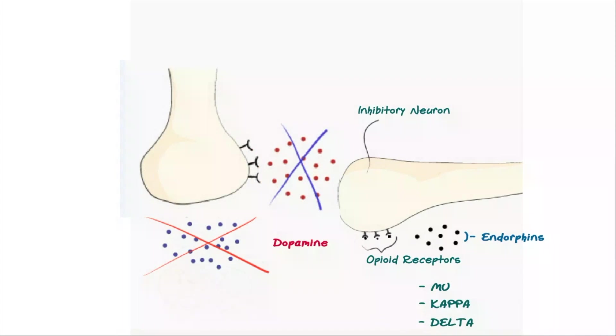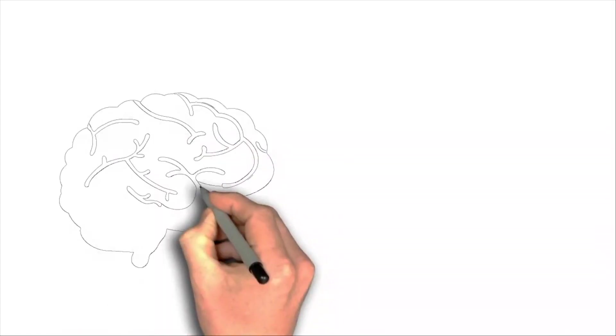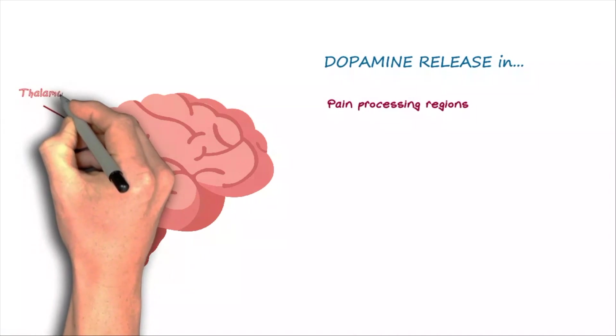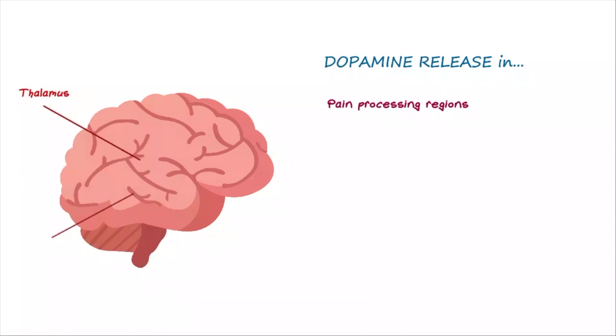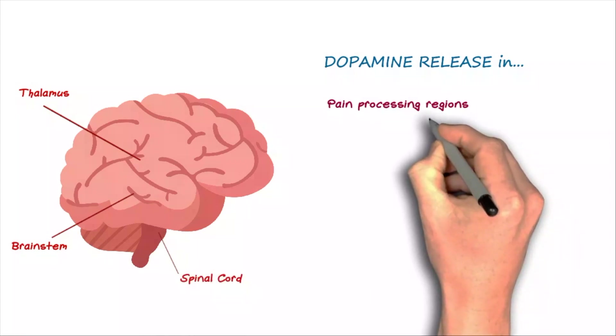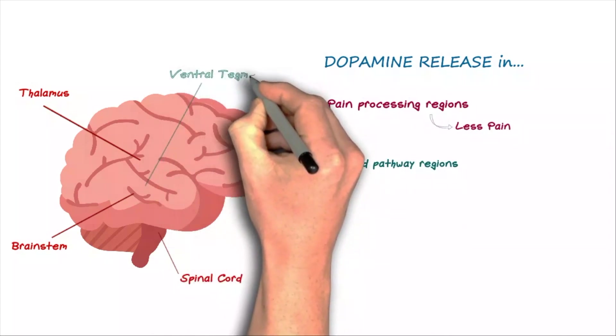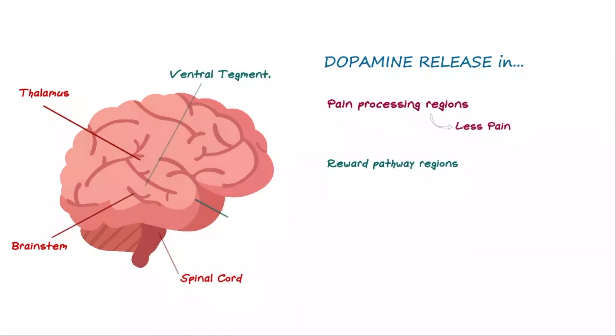The dopamine then gets picked up by a third neuron in the same area. When dopamine release takes place in pain-processing regions of the brain like the thalamus, brainstem and spinal cord, the result is feeling less pain. When dopamine release takes place in reward pathway regions like the ventral tegmental area, nucleus accumbens and prefrontal cortex, the result is a calming effect that feels good.